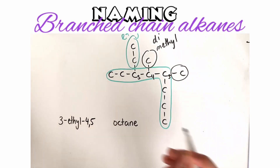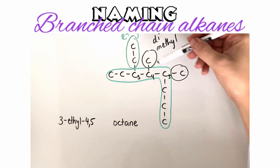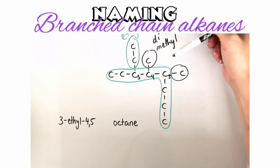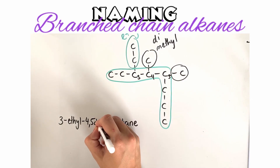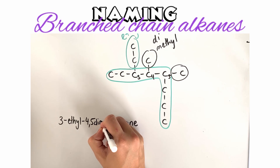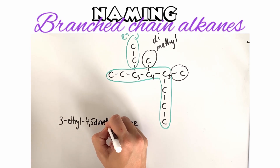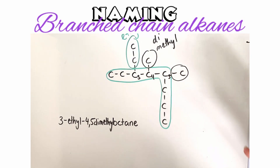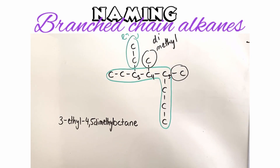So we write 4,5-dimethyl — the '4,5' telling us the positions of the two methyl groups. The full name of this compound is 3-ethyl-4,5-dimethyloctane.